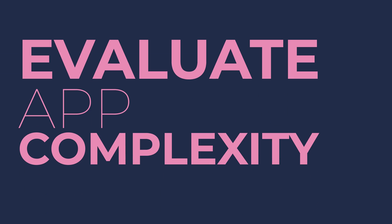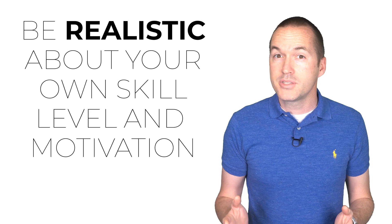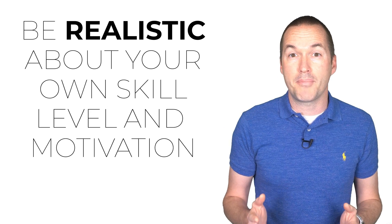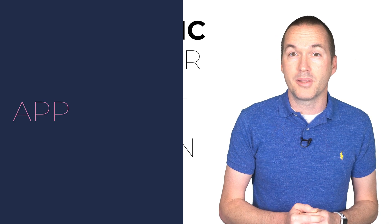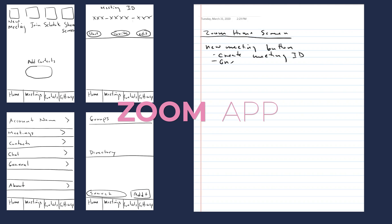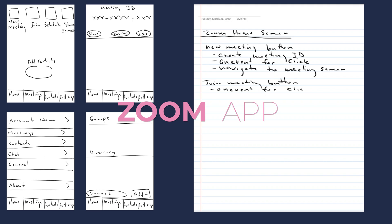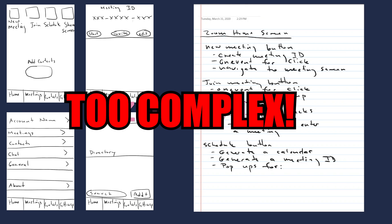I always encourage my students to challenge themselves and make programs that are interesting to them, but apps have a way of getting very complex very fast. The most important thing is to plan an app that you will be successful in completing. A good way to evaluate the complexity and feasibility of your app is to use note cards to show each screen of your app, then on a separate sheet of paper write down how the user will interact with each design element and which elements will need to change based on those interactions. Using this preliminary design technique, you can usually spot potential issues and reign in the scope of your project to an achievable level.